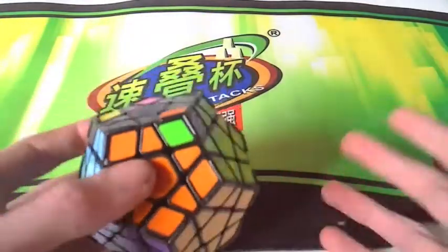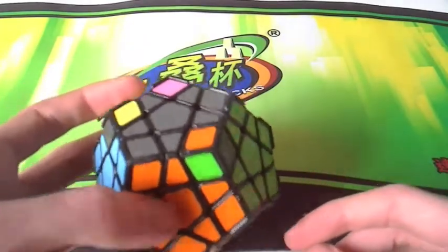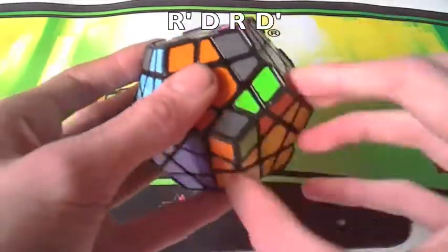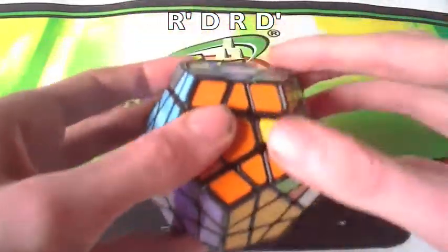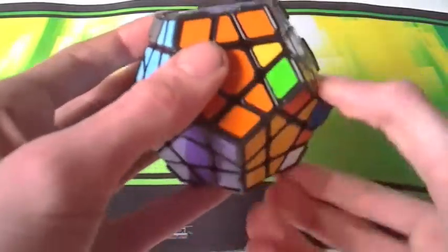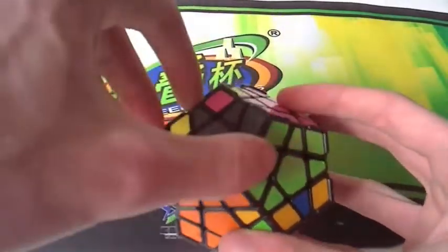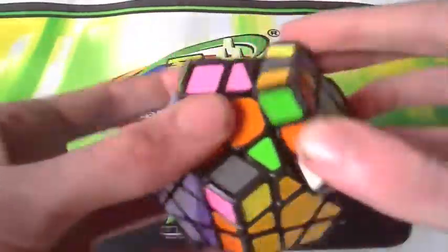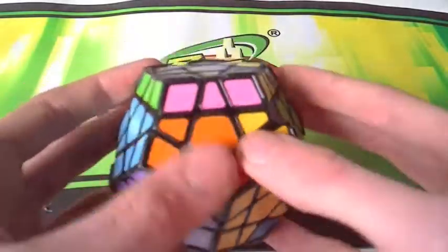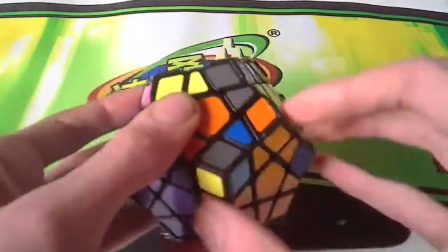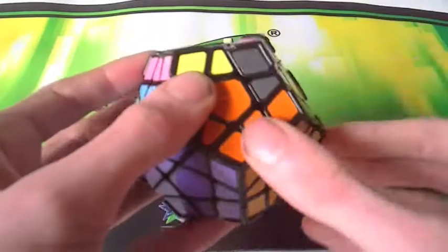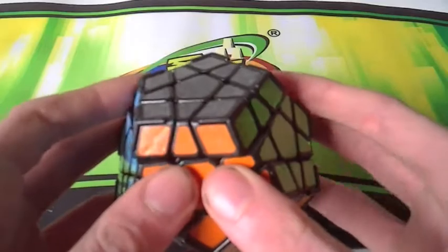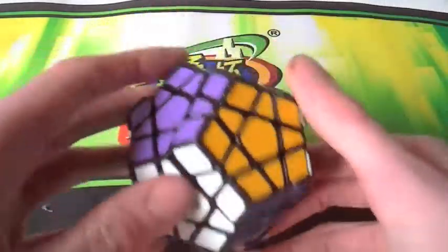Anyway, moving on to the final step which is corner orientation. This is very easy and it's just this. That, twist that one, then move any others in place and continue. Last one. Now all of them are done, do the AUF and that's everything solved.